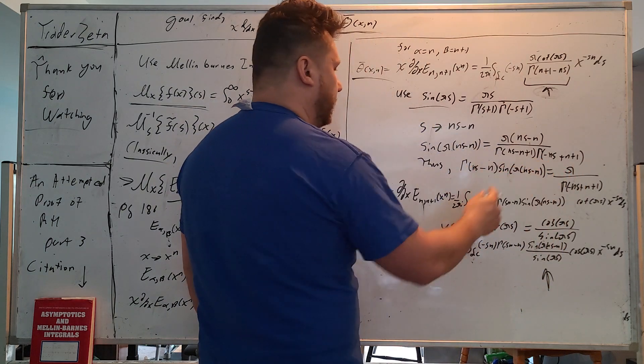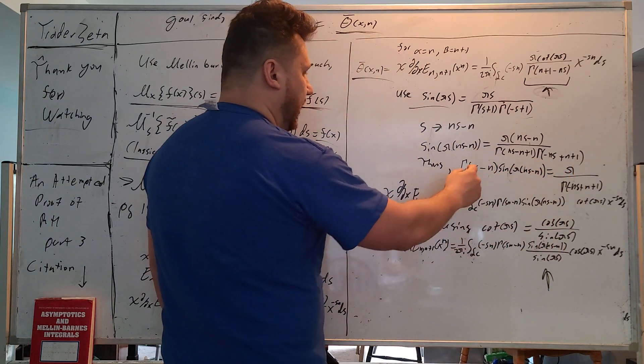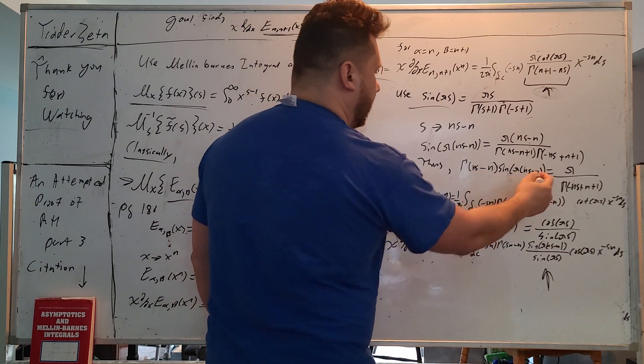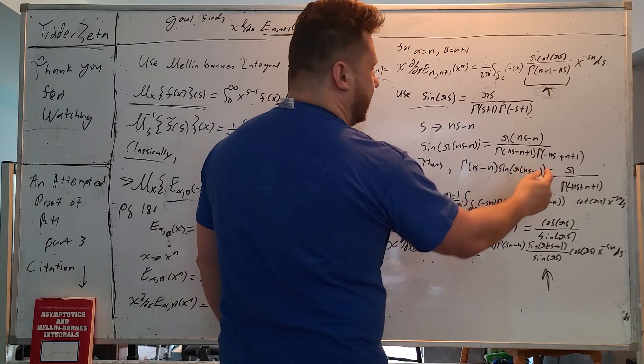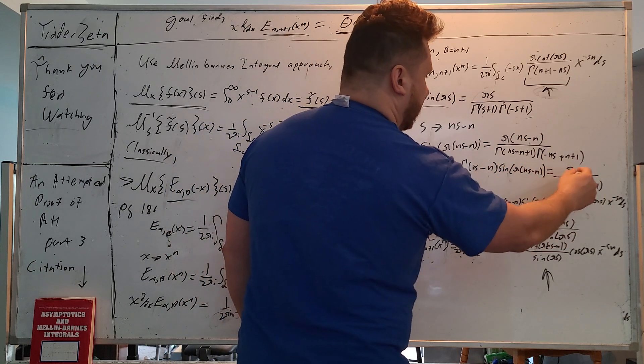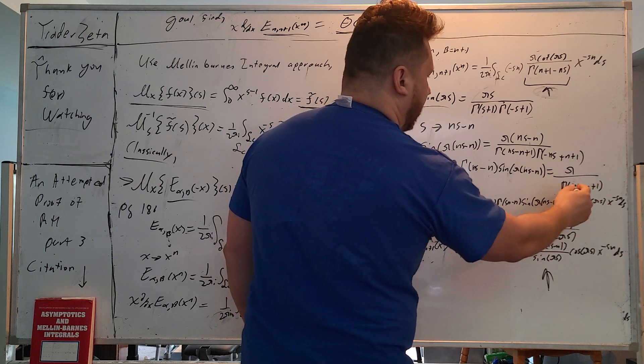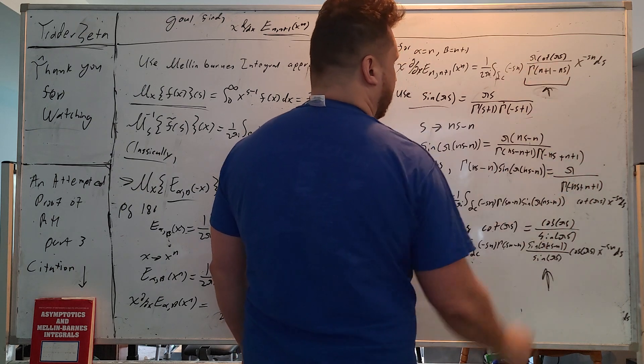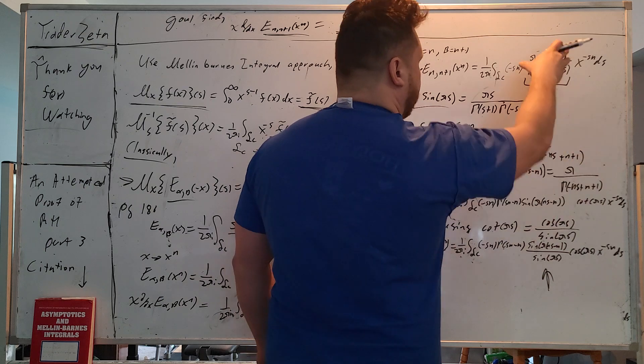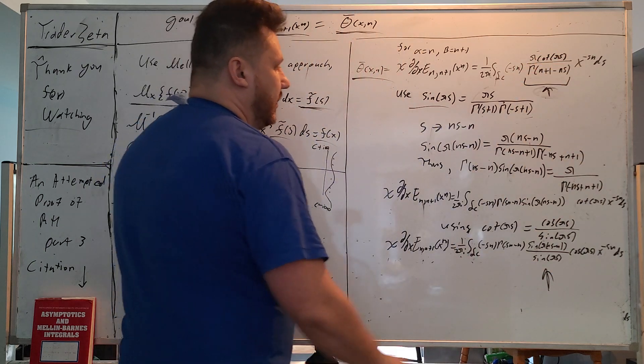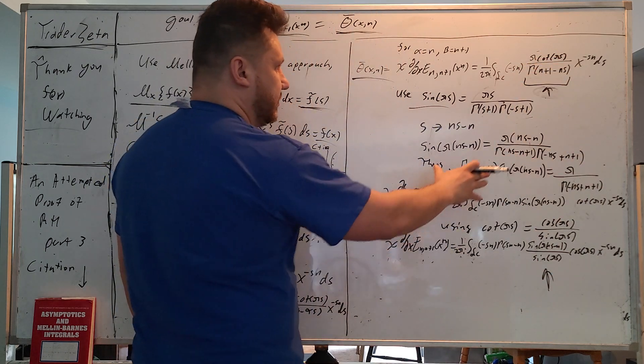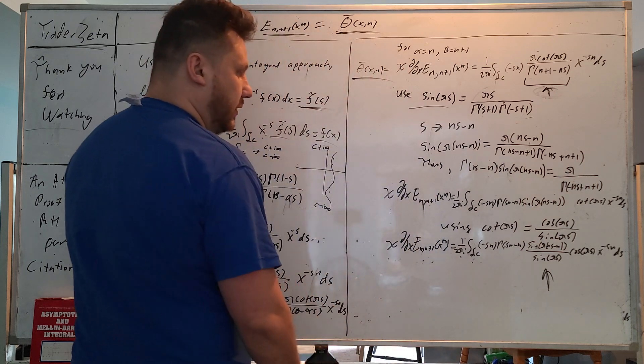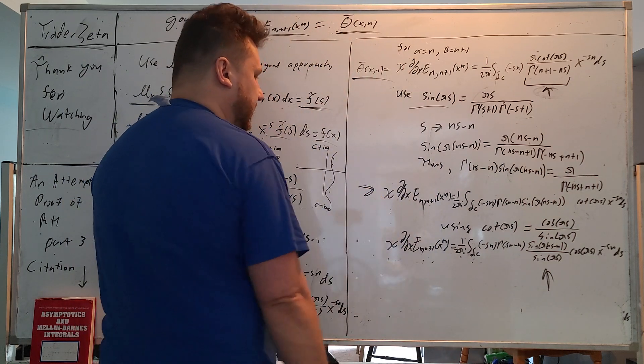And yes, we get this identity, which is very nice. This gamma ns minus n sine pi ns minus n equals this pi divided by gamma ns, which is right down here. So essentially we can plot this right in here. We can use a little bit of substitution and we get this entire representation.